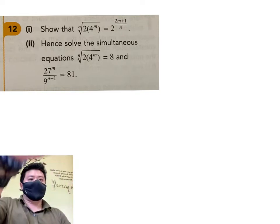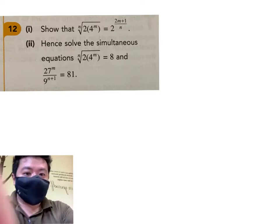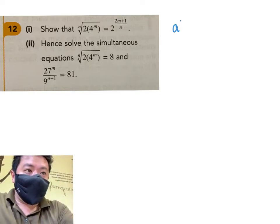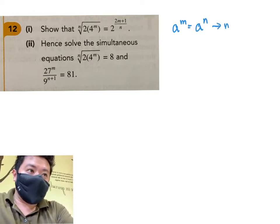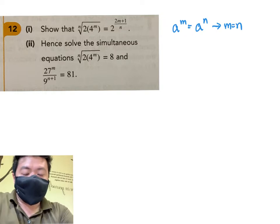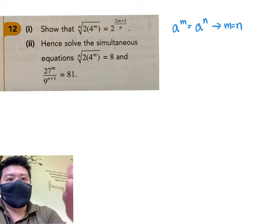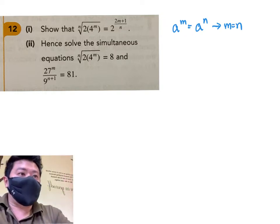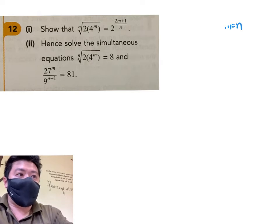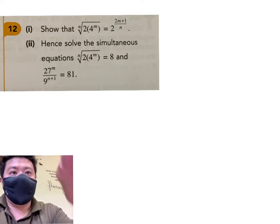The ideal case for this question is that if a to the power of m equals to a to the power of n, then this just means that m is equal to n. So with that idea in mind, we are going to try to create the same base on both sides so that we can solve the question.